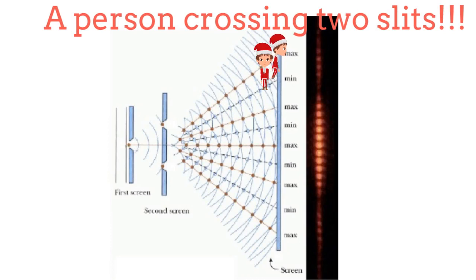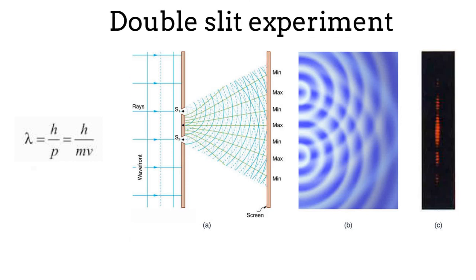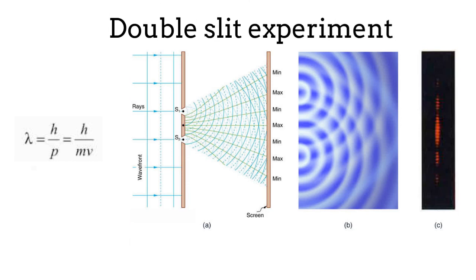In fact, a very small person of the size of an electron would cross two slits simultaneously inside a double-slit experiment. The person would then be forced to go to places where constructive interference patterns occur — this would be the wave behavior of the person. The double-slit experiment is one of the most solid evidences of quantum mechanics. The detected patterns appear even if the particles are sent one by one from a single source, and the number of impacts on the final screen is proportional to the intensity of the corresponding wave.